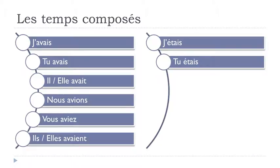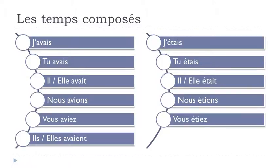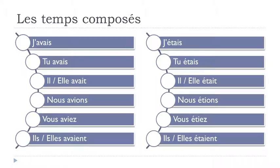Être at the imparfait: j'étais, tu étais, il était, elle était, nous étions, vous étiez, ils étaient, elles étaient. Same pronunciation rules apply — final S not pronounced for j'étais and tu étais; final T not pronounced for il était and elle était; final S not pronounced with liaison for nous étions; Z sound for vous étiez; liaison for ils étaient and elles étaient.